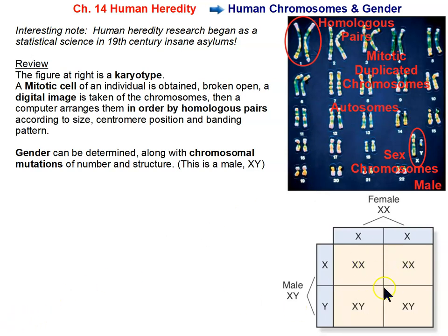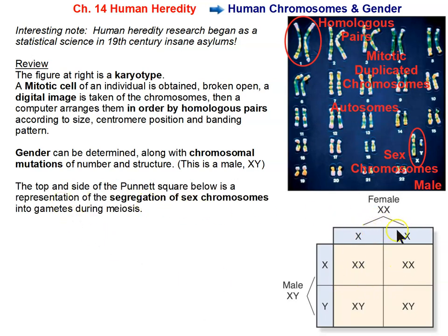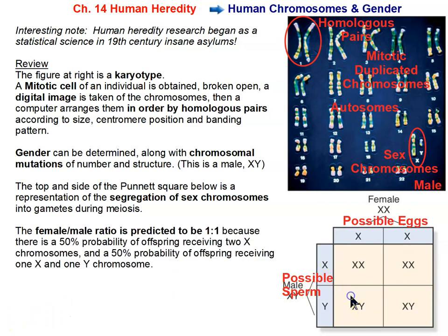This Punnett square is looking at the determination of sex. The top and side represent the segregation of sex chromosomes into gametes during meiosis — the possible gametes. Here we have possible eggs, and here we have possible sperm. Once we solve the Punnett square, it's clear to see why approximately half of any population is female and half is male — a 50/50 female-to-male ratio, though it's not exactly that due to random chance.